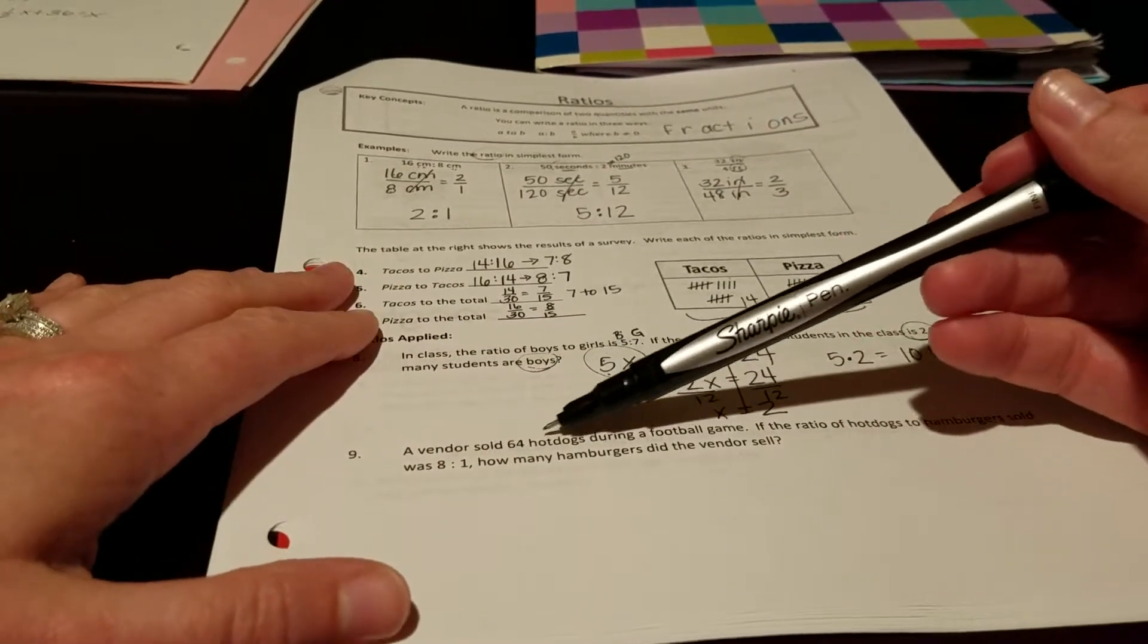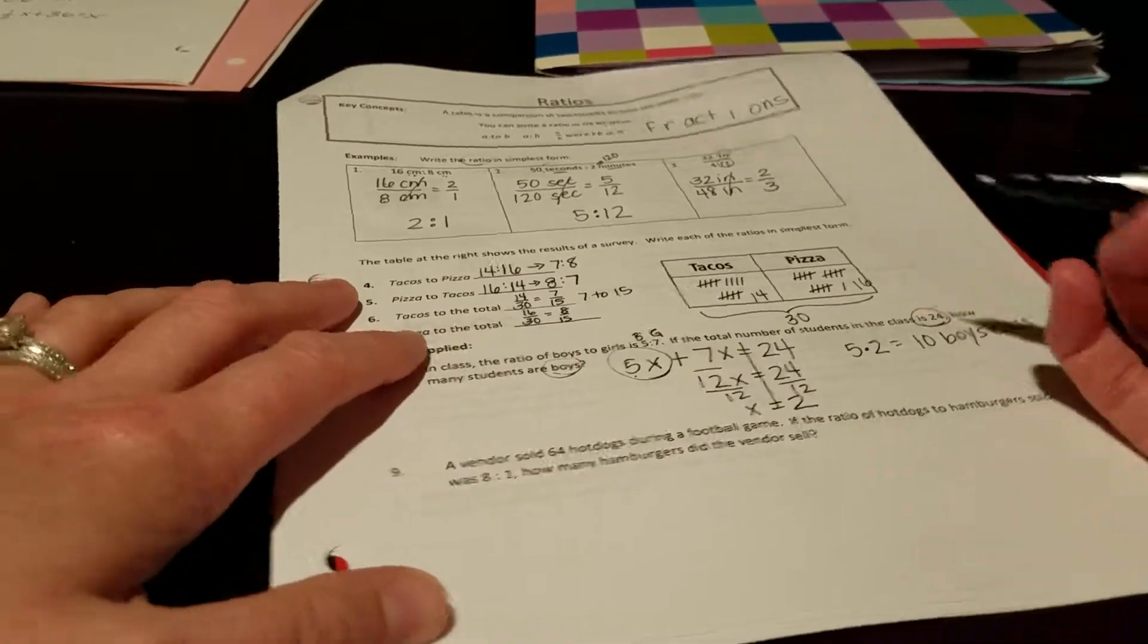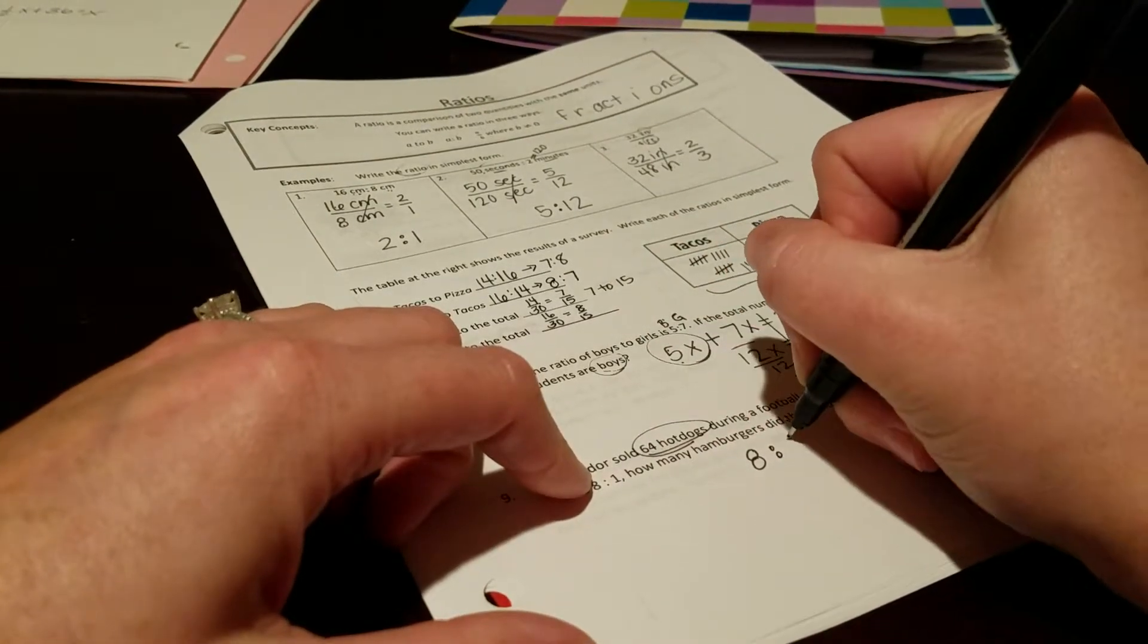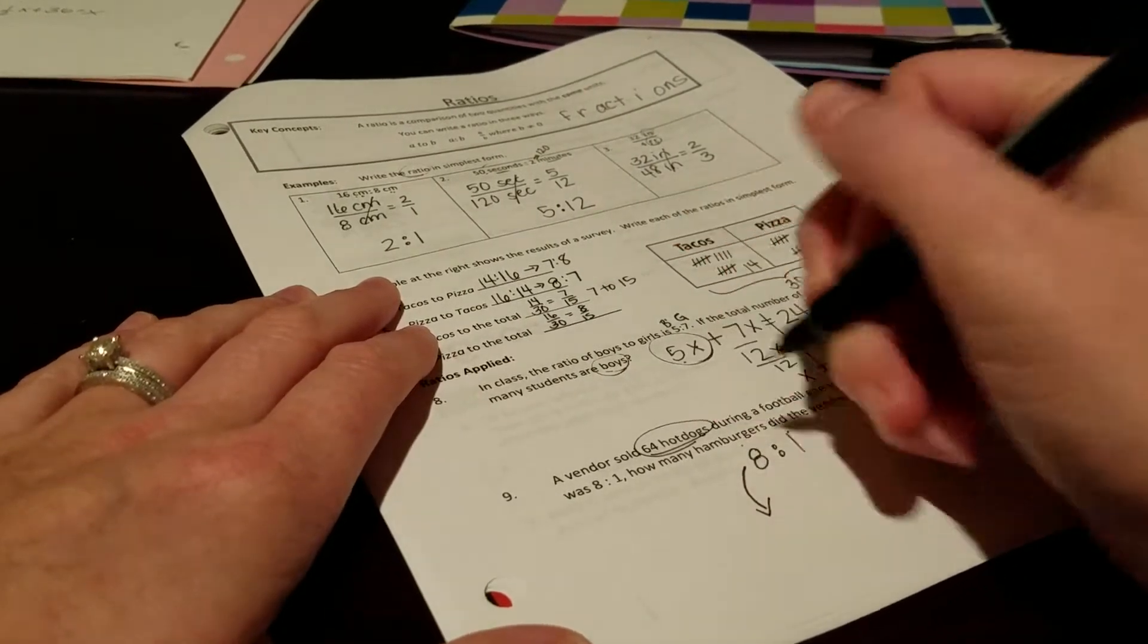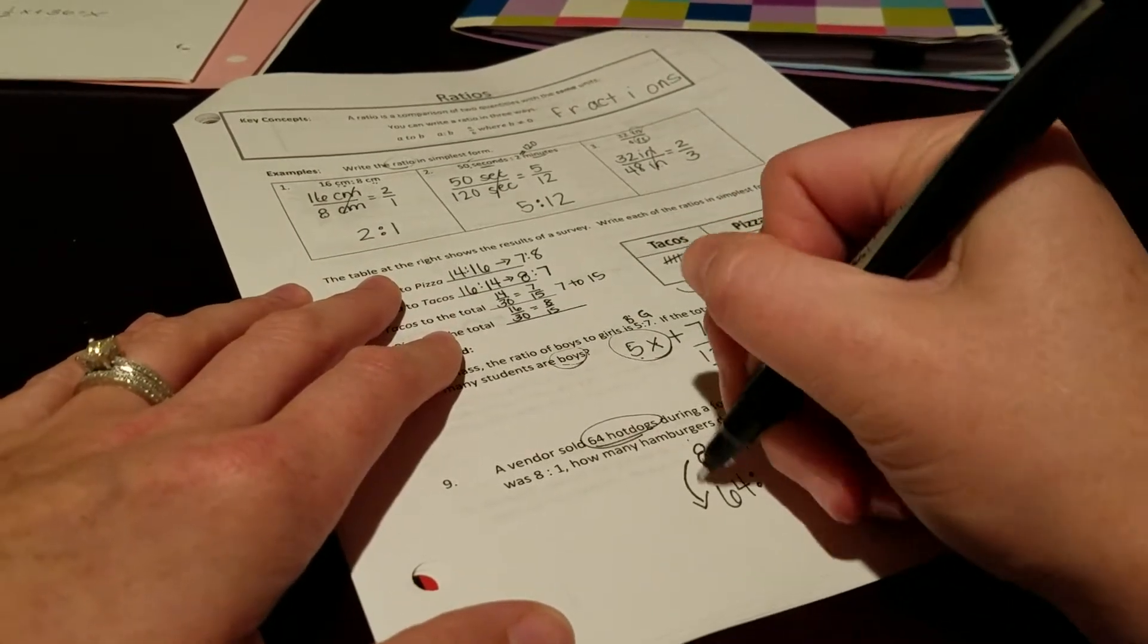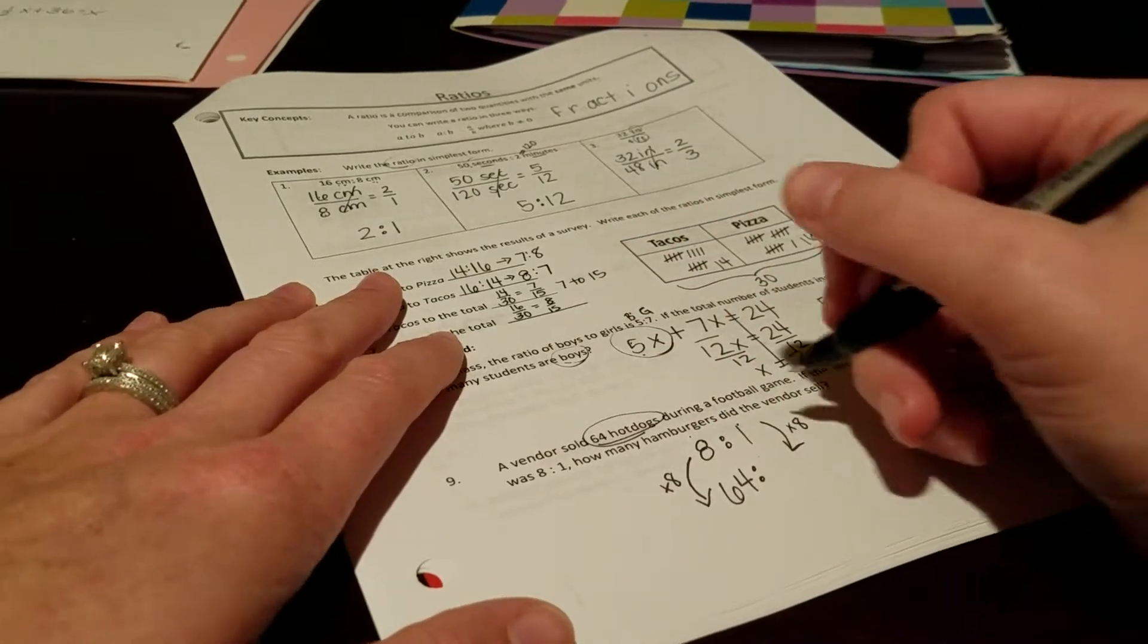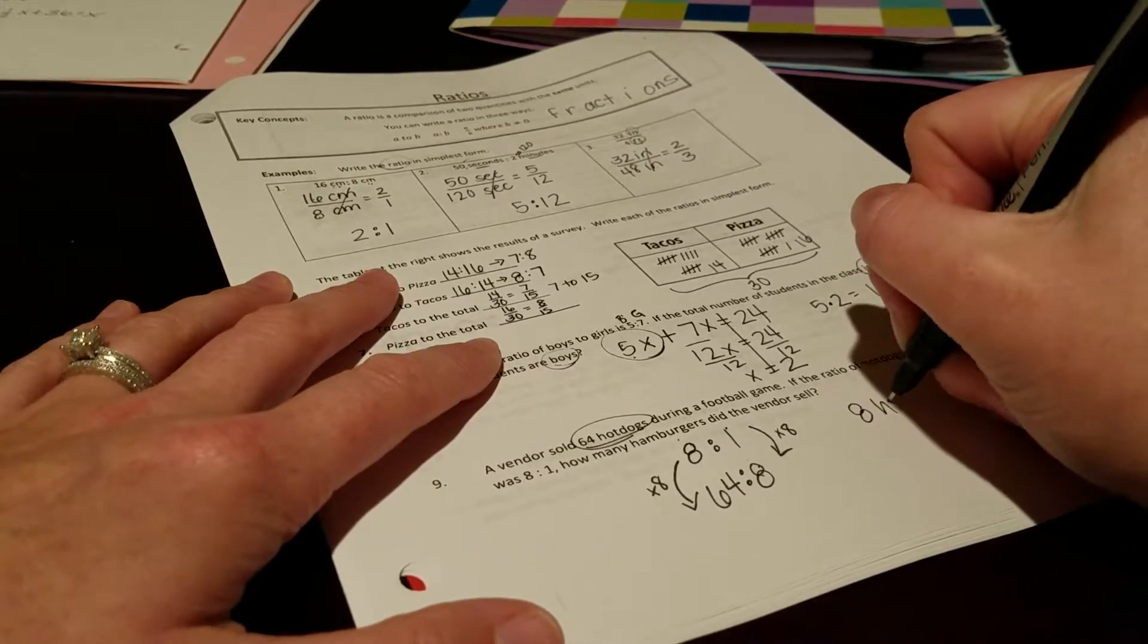In the next example, a vendor sold 64 hot dogs during a football game. If the ratio of hot dogs to hamburgers sold was 8 to 1, how many hamburgers did they sell? So this one's a little different because we don't know the total number of items sold. We only know how many hot dogs. So our ratio is 8 to 1, which is hot dogs to hamburgers. So hot dogs is now all the way up to 64. So we're thinking about multipliers here. 8 times what got us up to 64? Times 8. So we do the same thing to this because the ratio of hot dogs to hamburgers has to stay the same. So we're going to get 64 to 8. So there were 8 hamburgers sold.